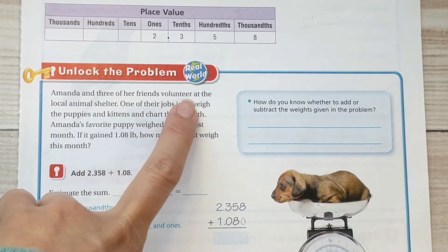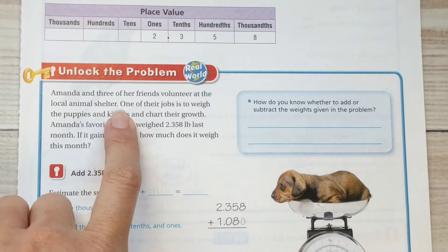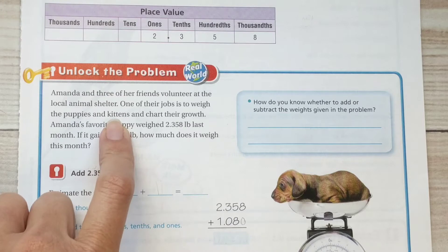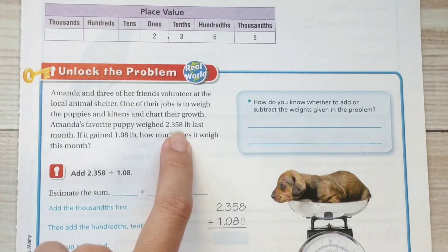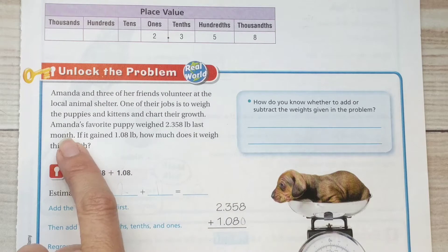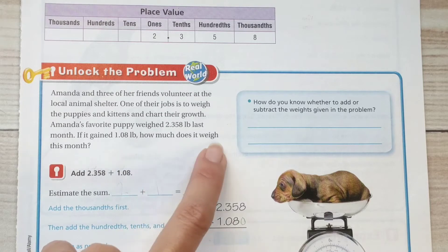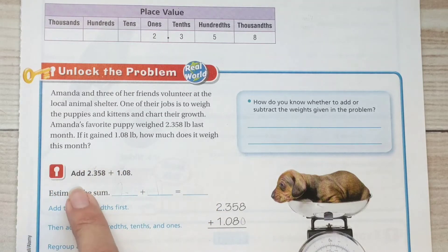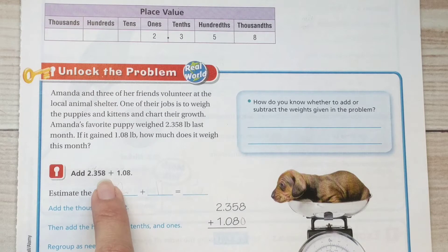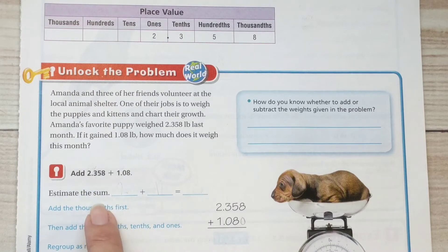Amanda and three of her friends volunteer at the local animal shelter. One of their jobs is to weigh the puppies and kittens and chart their growth. Amanda's favorite puppy weighed 2.358 pounds last month. If it gained 1.08 pounds, how much does it weigh this month? So we're going to add these two multi-digit decimals together.